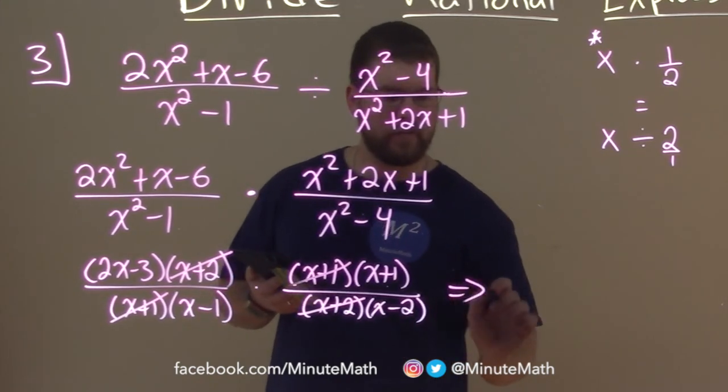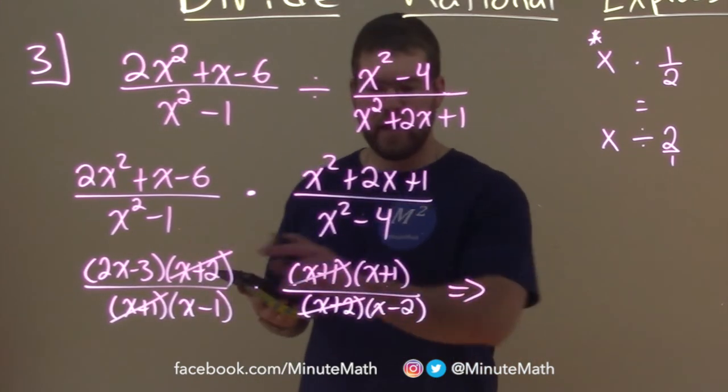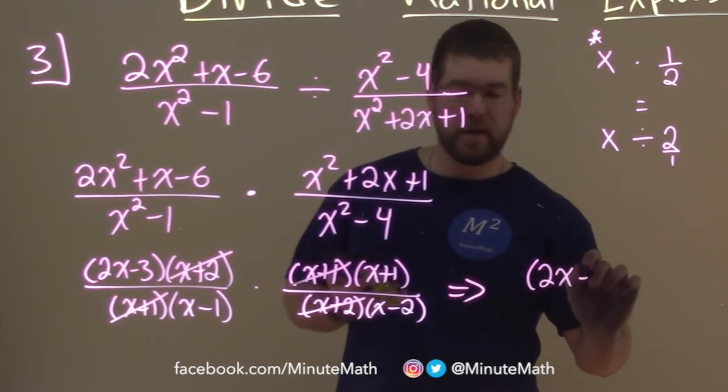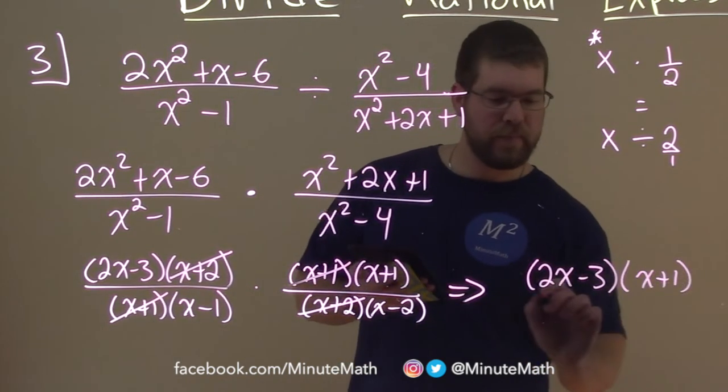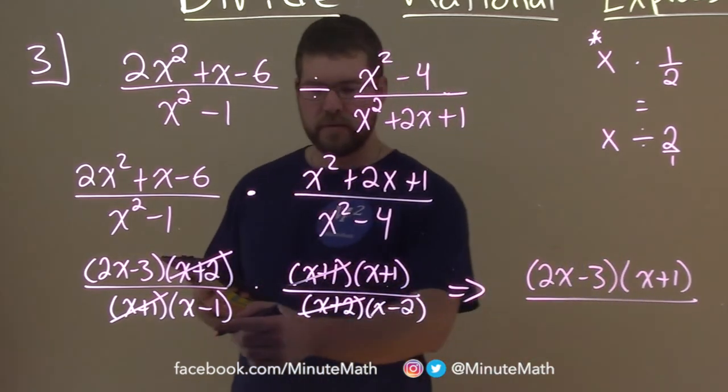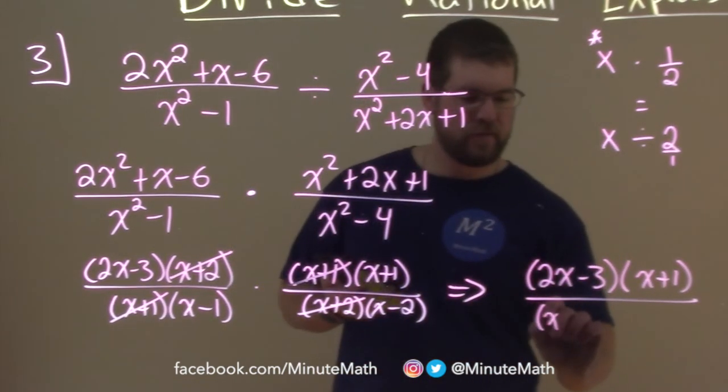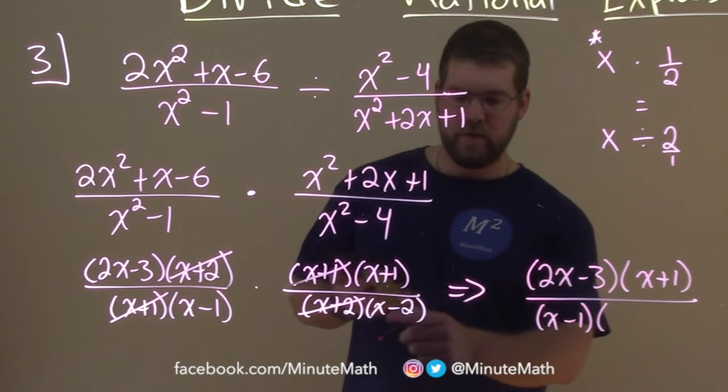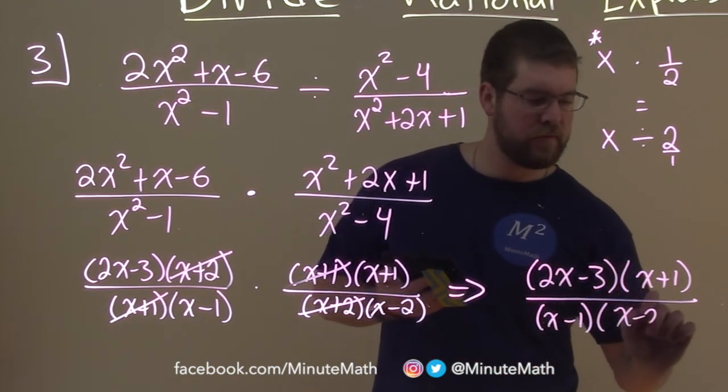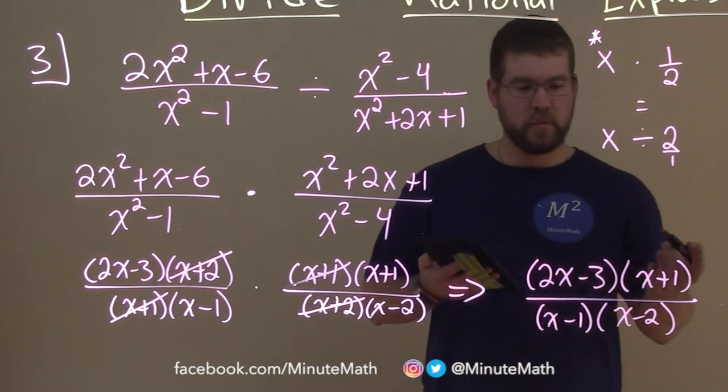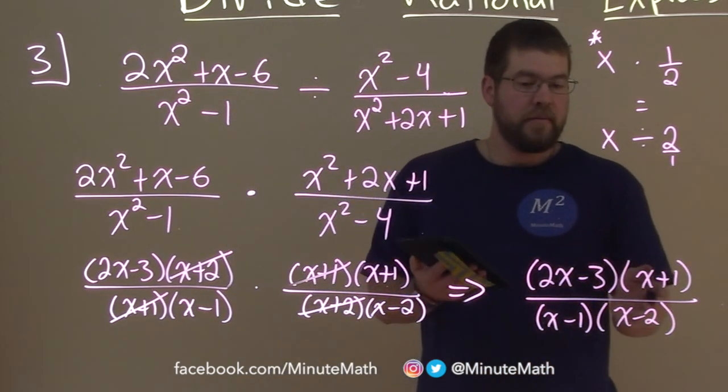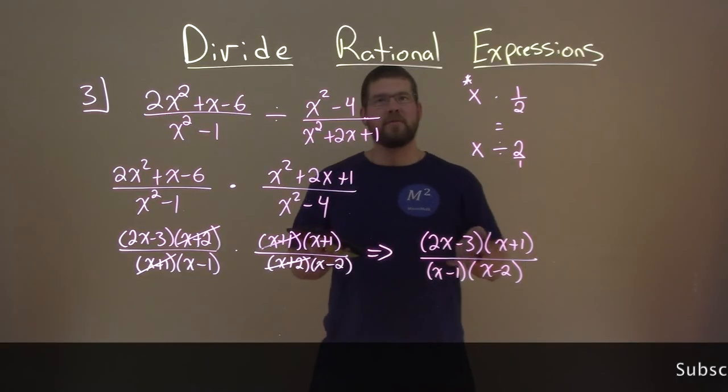So let me write our final answer combining what's left: 2x minus 3 times x plus 1, over x minus 1 times x minus 2. And we brought everything over and we're done. There's nothing else that we can simplify; it's in its simplest form.